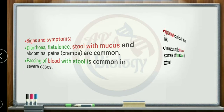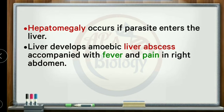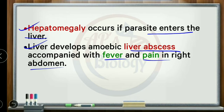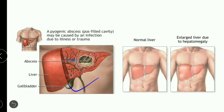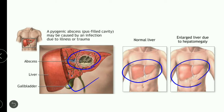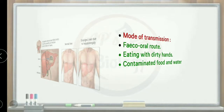In severe cases, hepatomegaly occurs when the parasite enters the liver, causing amoebic liver abscess with inflammation. This presents as fever and pain in the right abdomen. Hepatomegaly is a key structural liver symptom of this disease.